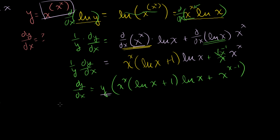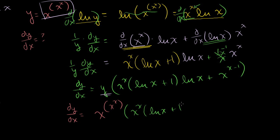Substituting y = x^(x^x) back in, our final answer is: dy/dx equals x^(x^x) times the quantity x^x times (ln x + 1) times ln x, plus x^(x minus 1). What looks like a simple problem turns out to be quite complicated when you appreciate what it's saying.